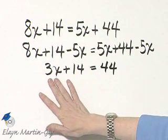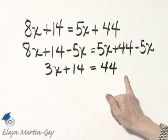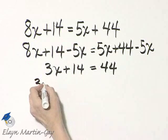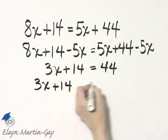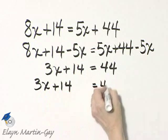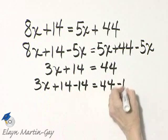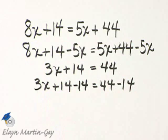I've got my variable term over here. Let's get constants on the right side. I'll subtract 14 from both sides. Here's the left side, here's the right side. Now I'll subtract 14 on the left side, and I must do the exact same thing on the right side.